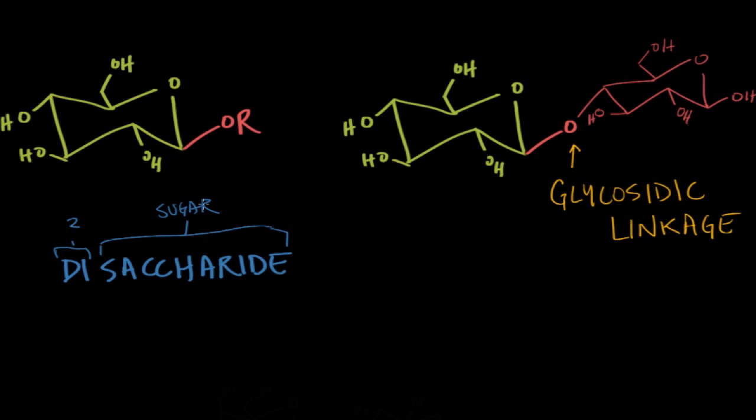With disaccharides, most commonly the glycosidic linkage forms between the anomeric carbon, or C1. Remember, this is the anomeric carbon, C1, over in our glycoside here would be right here.